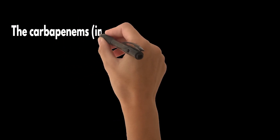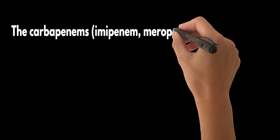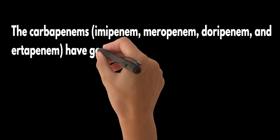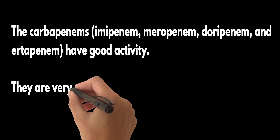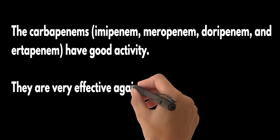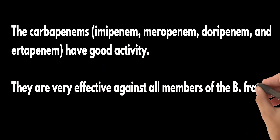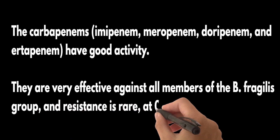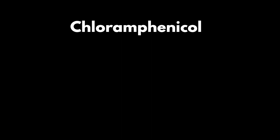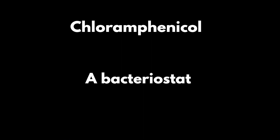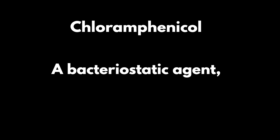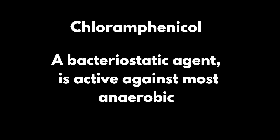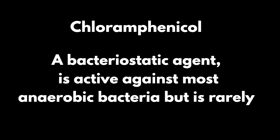The carbapenems — imipenem, meropenem, doripenem, and ertapenem — have good activity. They are very effective against all members of the B. fragilis group, and resistance is rare at 0.1%. Chloramphenicol, a bacteriostatic agent, is active against most anaerobic bacteria but is rarely used because of its side effects.